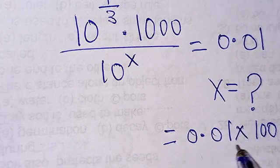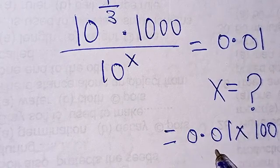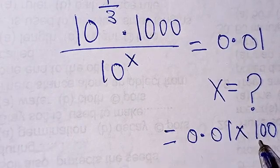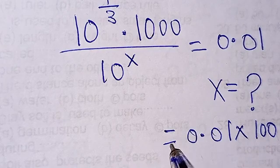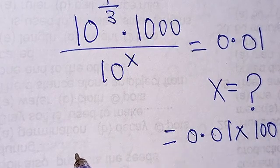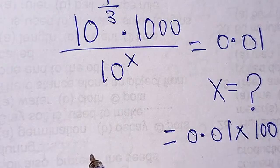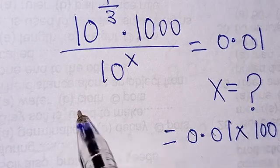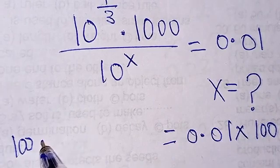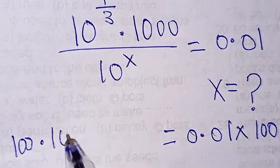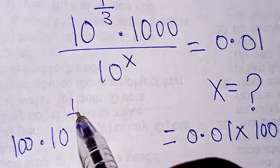So now for me to multiply this right hand side by 100, by balancing rule of equation, I must multiply 100 by this. So I'm going to be having 100 multiplied by 10 to power 1 over 3 multiplied by 1000 divided by 10 to power x.